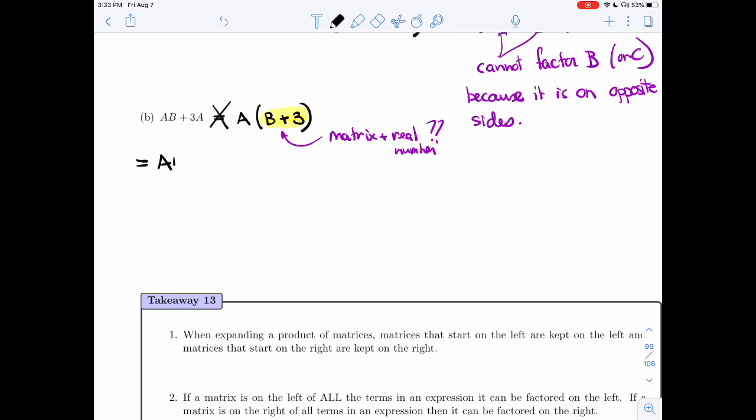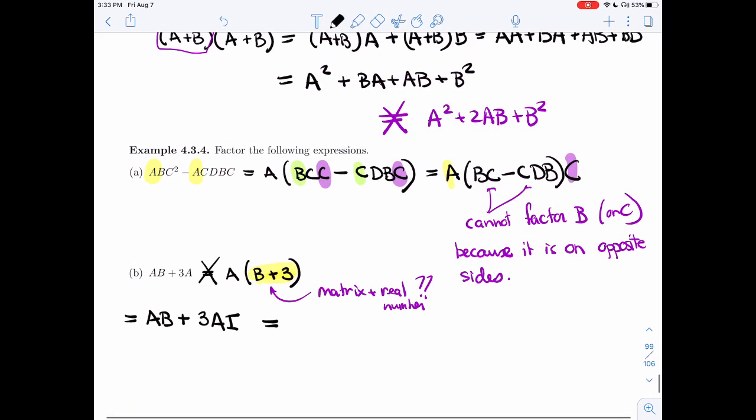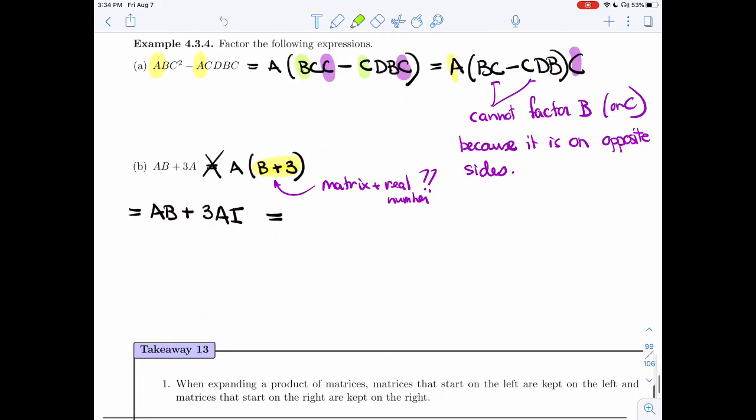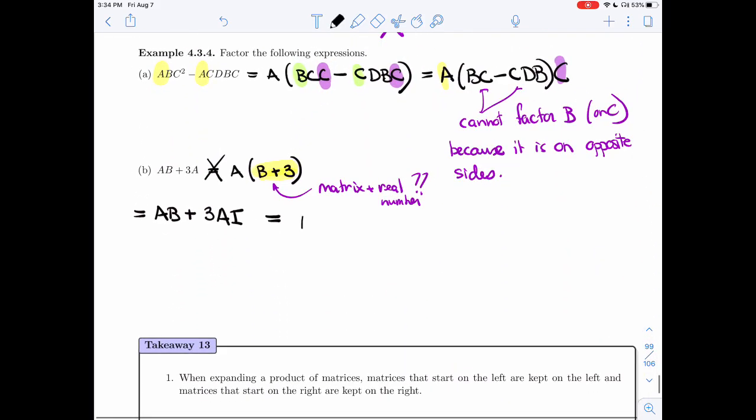I'm going to replace A by A times I. I'm going to replace A by A times I. I know those are equal. And now when I pull A out, I'll have an I left. So I'm not going to have just the 3 hanging around. Now I'm going to use this property here that tells me that I can move a real number, little a, around. So in this case, my little real number is 3. So I'm going to write it as AB plus A times 3I.